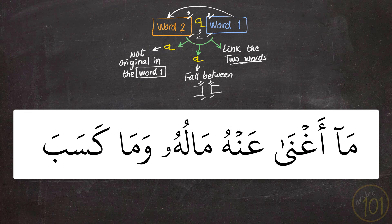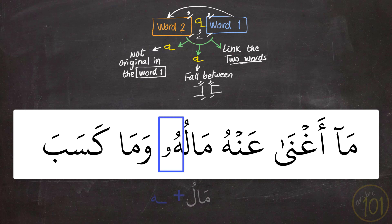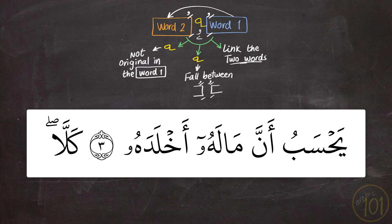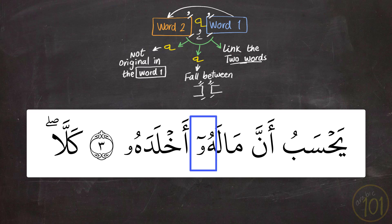Now let's take these three conditions and apply them on a number of examples. First example: مَا أَغْنَا عَنْهُ مَالُهُ وَمَا كَسَبَ. Here the ها is an extra part of the word — the original word is مَال, so ها is added to it. It existed between two letters, one with ضمّ and the other with فتحة. Since we kept on reading, we said مَالُهُ وَمَا كَسَبَ. One more example: يَحْسَبُ أَنَّ مَالَهُ أَخْلَدَهُ. Again, same word, so we extend it for two counts.